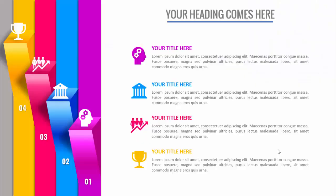In today's tutorial I'm going to show you how to make a four-step vertical infographic slide design in PowerPoint. As you can see, I have created the four steps along with a 3D object. This is point number one along with the icon, and on the right side of the slide you can see the icon with the title and the detailed text, then point number two with a different icon, point number three, and point number four.